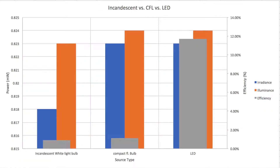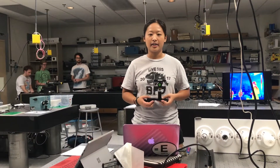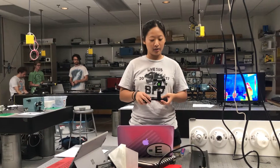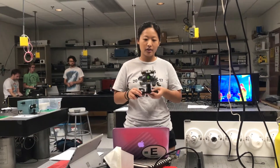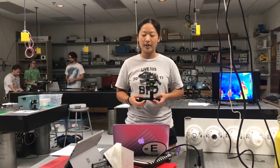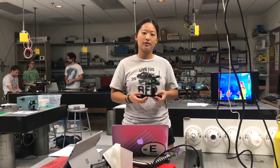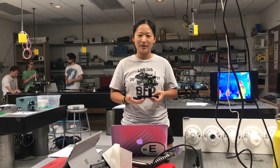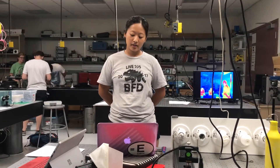You can see in our graph the difference between irradiance and illuminance — the illuminance being higher for both incandescent and CFL, although much more so for incandescent. This is because we used the filter, and with the photodiode we had calibrated it for 555 nanometers.